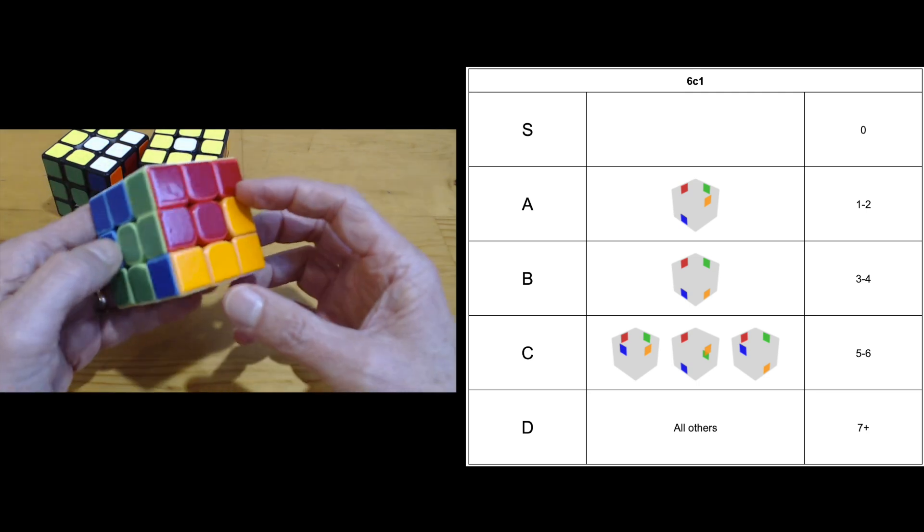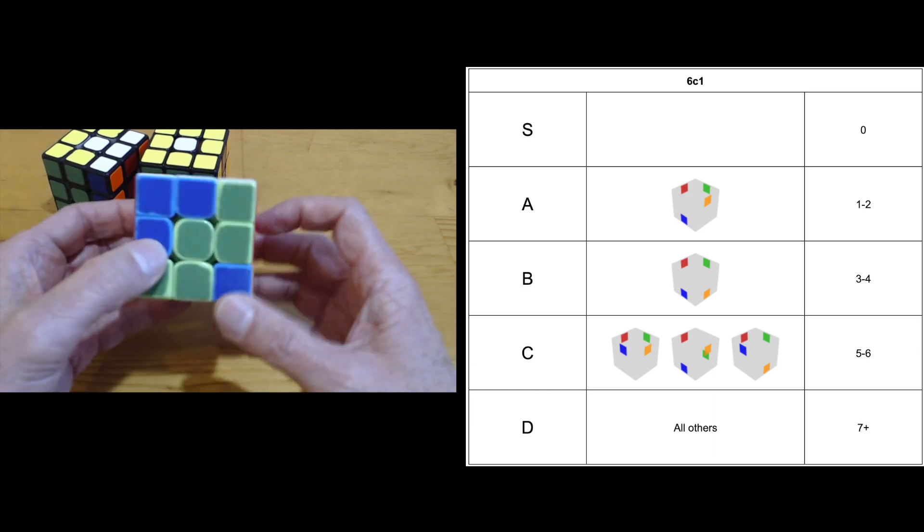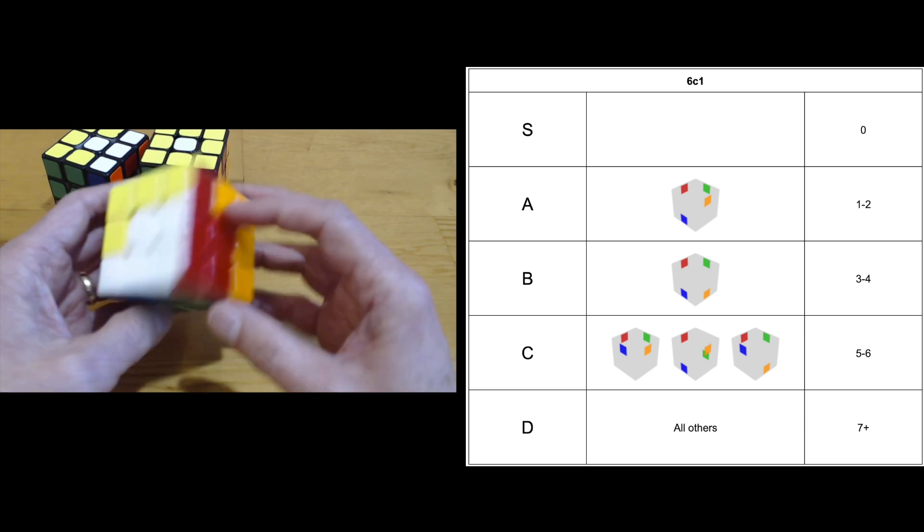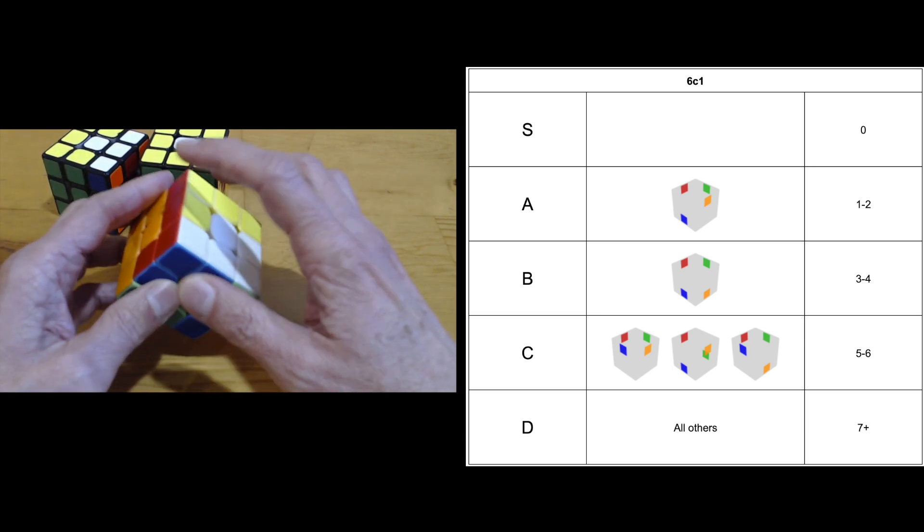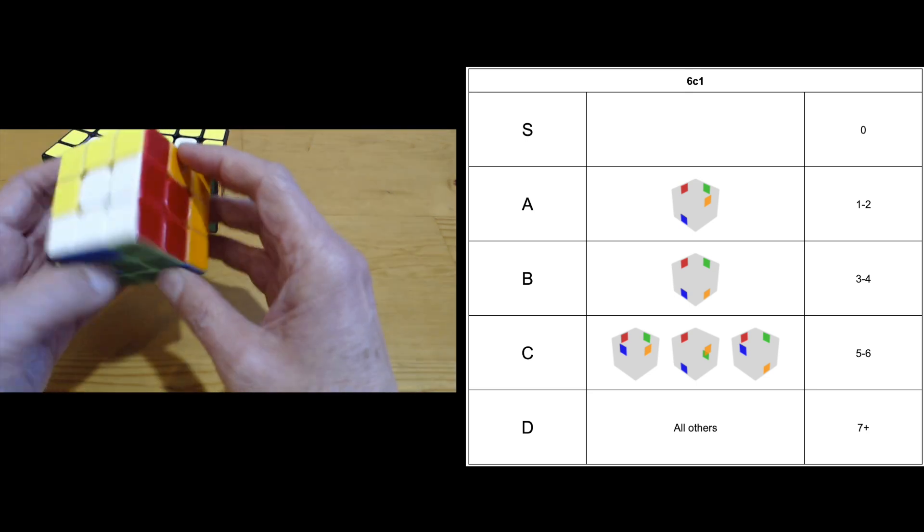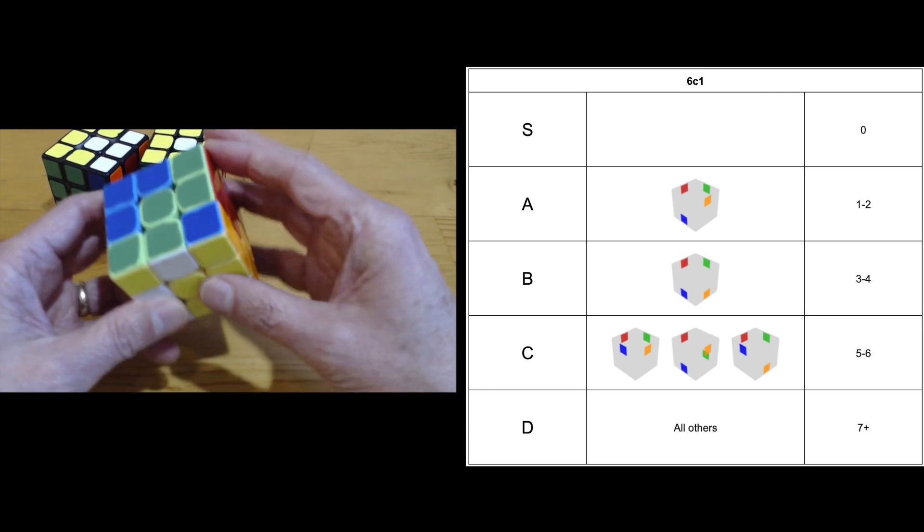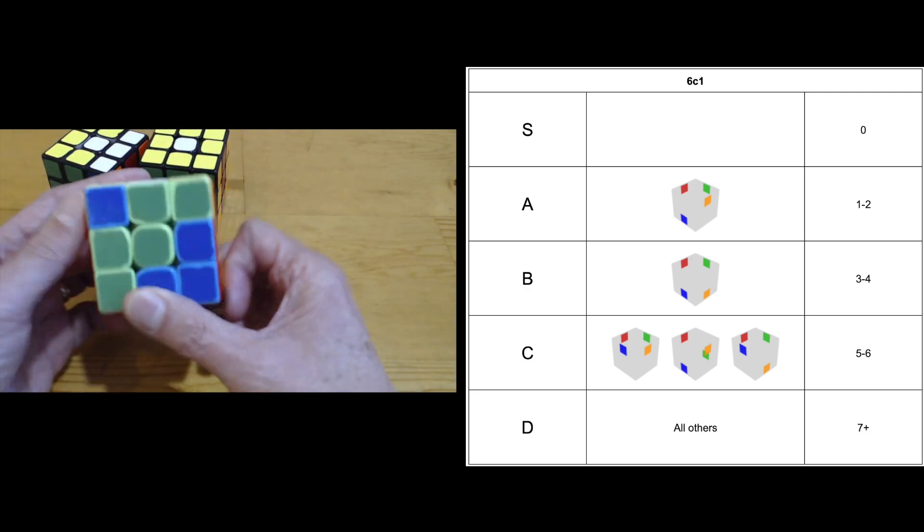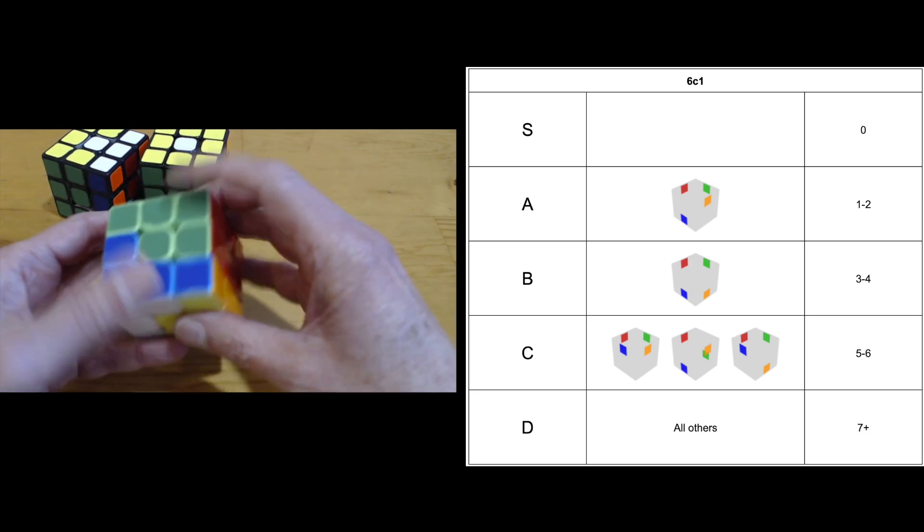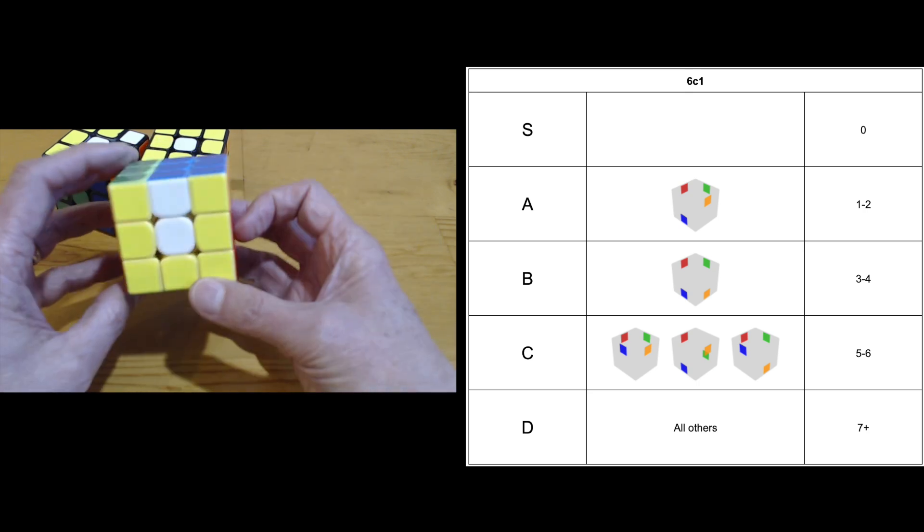And then the other cases are all cases where you have to do more than just a corner swap with cancellations to bring all the bad edges to the top. For example, this case where I still have my edges, like here's a bar bad edge and here's a slash bad edges, but these are not in alignment with the corners. If I set up the corners, I need the F2 to set up the corners, but now I didn't bring all the edges to the top. So now in order to do that, I need F, R, F, R, F, R, basically this 2E2E insertion. And so that's considerably more moves.